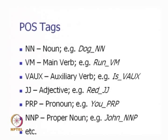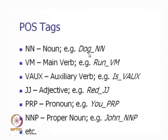Here are some examples of part of speech tags. NN is noun — for example, dog is NN. One of the options to place the category information is by placing an underscore and then placing NN, but you could also conceive of this being an XML file where each word is placed within XML markup which also specifies what the tag of the word is.